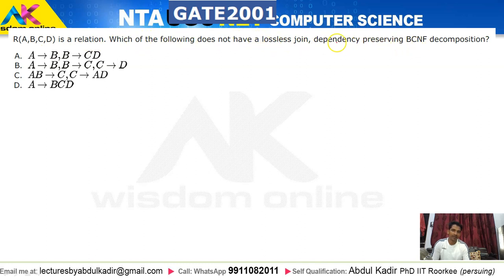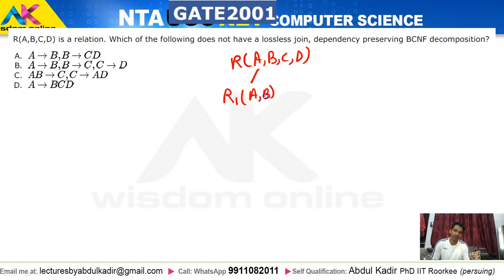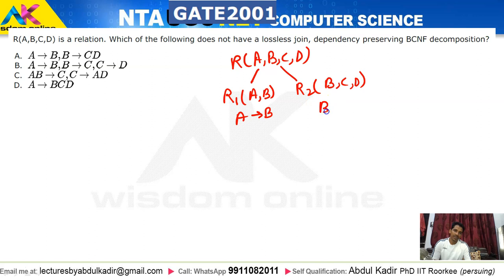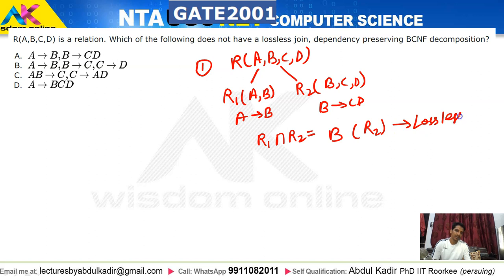The next question asks which decomposition of R(A, B, C, D) does not have a lossless join dependency-preserving BCNF decomposition. In the first option, R is decomposed into R1(A, B) with A → B and R2(B, C, D) with B → C D. R1 ∩ R2 = B, and B is the super key of R2 — so this is lossless and dependency-preserving.